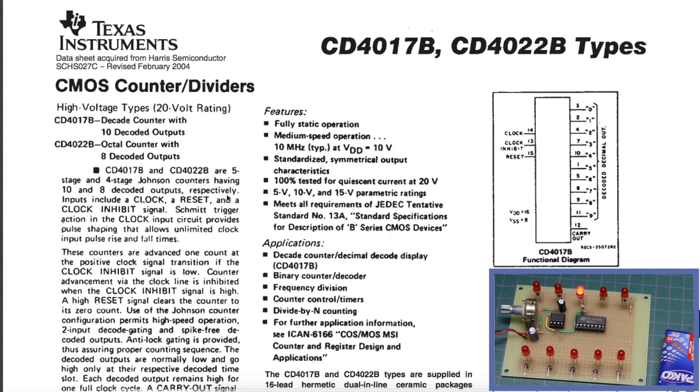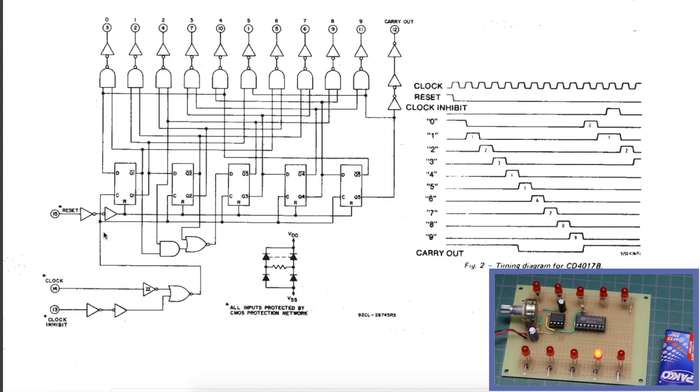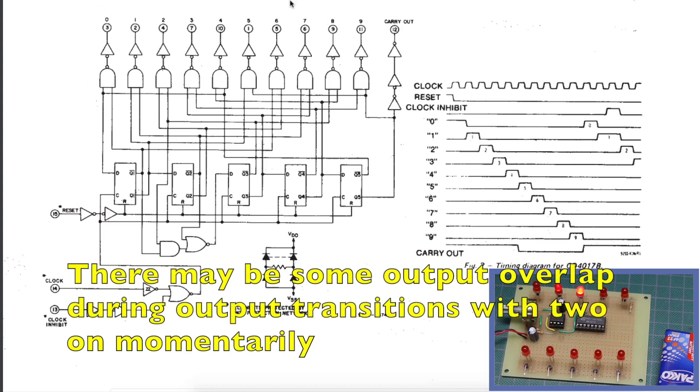Inside, there's a 5-stage Johnson counter. On every clock pulse, the internal counter will advance, and the decoder will sequentially turn on just one output at a time, active high.